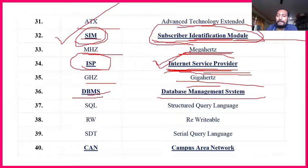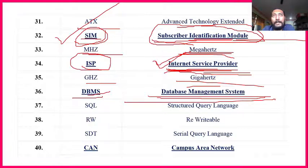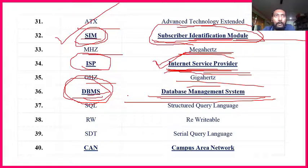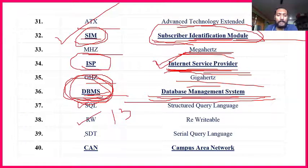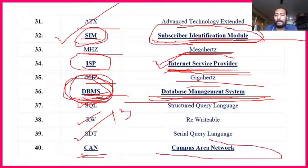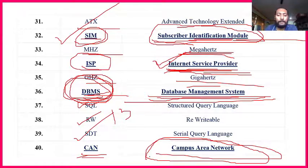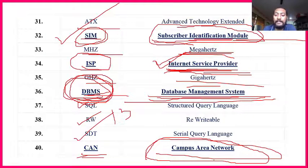DBMS — Database Management System — is very important. For any personal computer or large company, you need to manage the database. In big companies — government or private — there are dedicated officers to manage the database because data is very important for company growth, loss, and profit. CAN — Campus Area Network — is somewhat important. In your university or college, there will be a Wi-Fi network restricted to that campus.